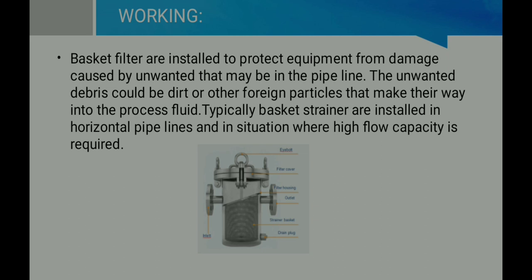Let us see the parts of a basket filter or basket strainer. We have an inlet and outlet which help to connect the pipes, and we have a strainer basket which helps to remove the particles. We have a filter at the top or bottom of the strainer basket, a drain plate used for the drain system to remove particles or for cleaning purposes, a filter cover, and a bolt at the top.